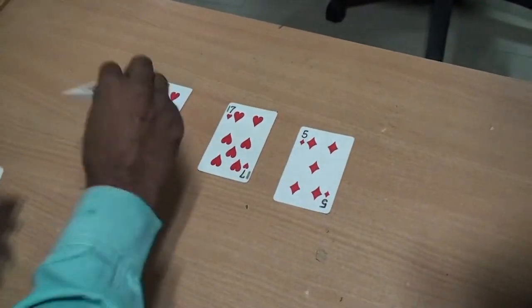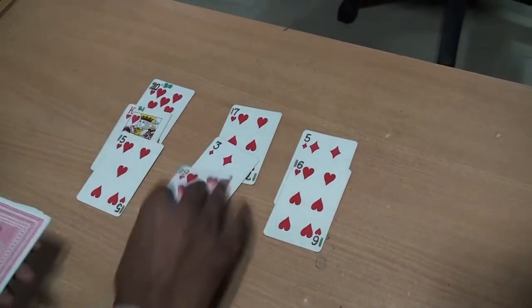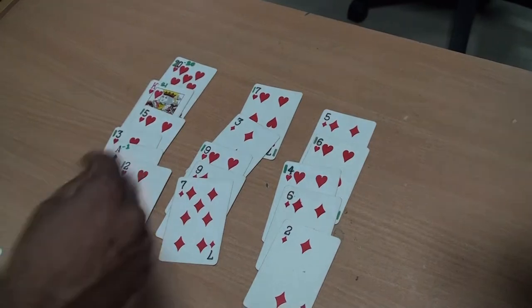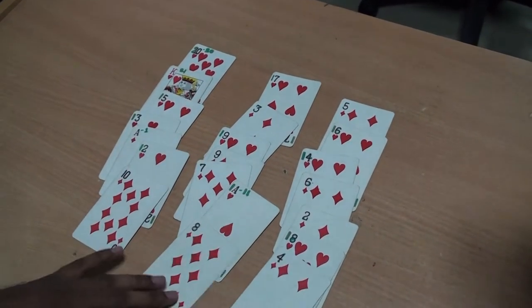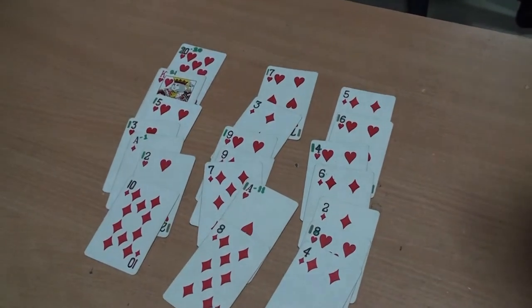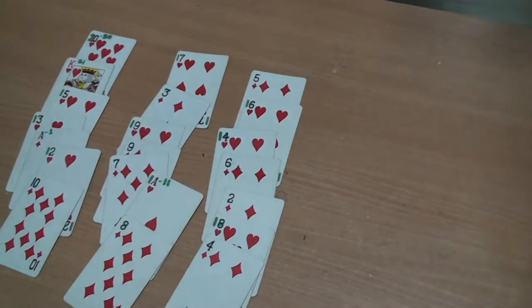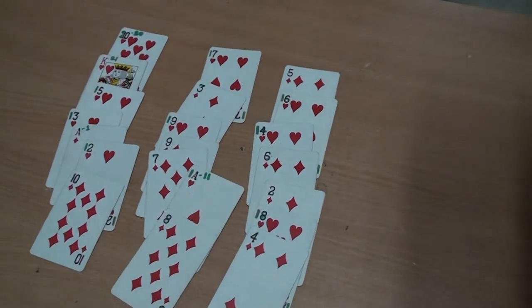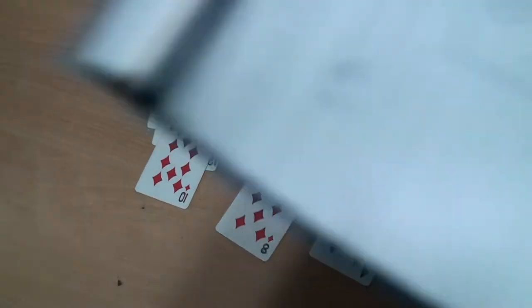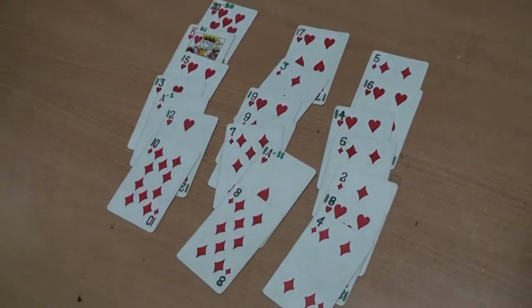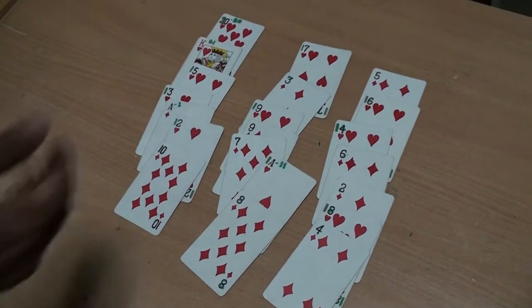So let's get started. First of all, I place the cards. Okay. You guys can choose any one number and show to the camera. I am not going to see that. Show to the audience. Let them see. Any one number you have to choose. You guys made your choice. Yes? Yes.